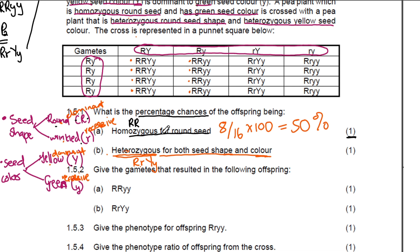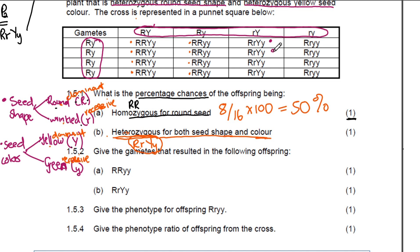Now you need the percentage of offsprings that basically have this genotype. Let's go back to our table and see how many have a big R, small R and a big Y, small Y. We find the first one, the second one, the third one, and the fourth one. We cannot choose the ones with two capital letter R's, and we cannot choose ones with two small Y's — we want one big Y and one small one. So out of the 16, only four offsprings have a heterozygous condition for both. Four out of 16, multiply by 100 — the answer is 25%.